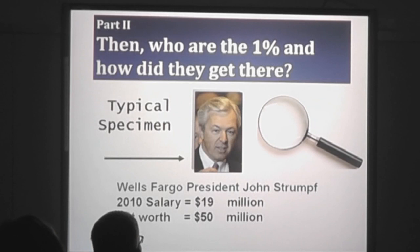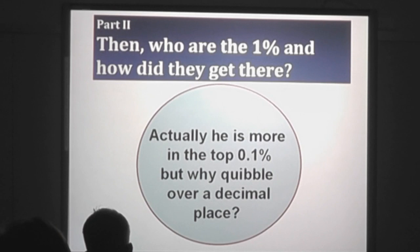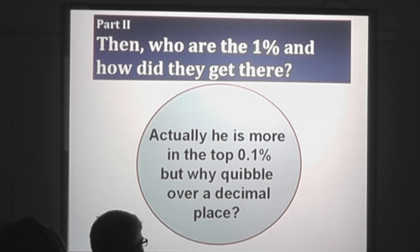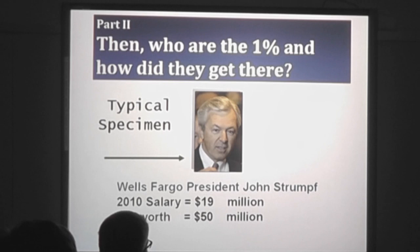Roosevelt believed that the men inside had a right to a redress of their grievances. Who are the 1% and how did they get there? Here is a typical specimen of the 1% — John Strunk, the highest paid banker in America. His net worth is only $50 million, and he's actually in the top 0.1%. When you look at Mayor Bloomberg, Warren Buffett, or Gates, there are several decimal points over from this guy. The difference between the bottom of the 1% and the top of the 1% is much greater than between the bottom and top of the 99%.